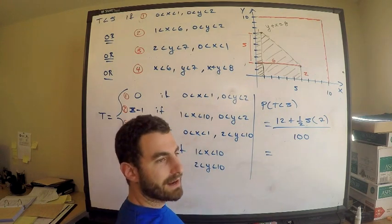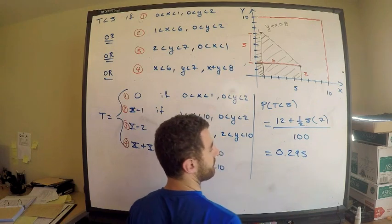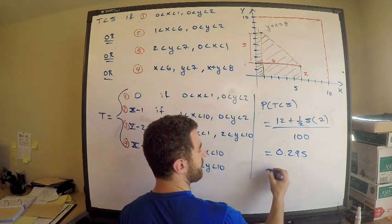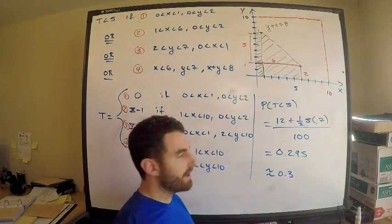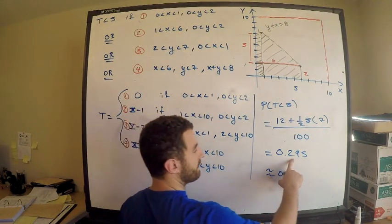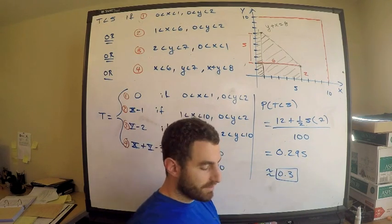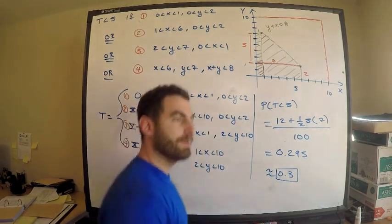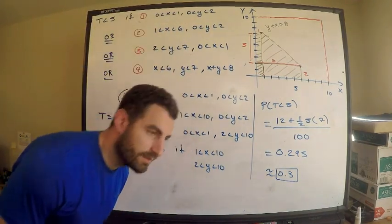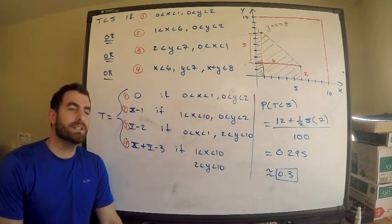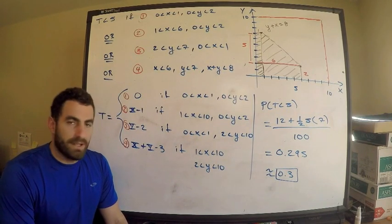The area of the rectangle is 12. The area of the trapezoid is one-half times the height of five times the sum of the bases: six plus one equals seven. That gives 35/2. Dividing by the total area of 100, we get approximately 0.295, which is roughly 0.3 — or three-tenths. Hopefully this was helpful; thank you for subscribing and liking the video.